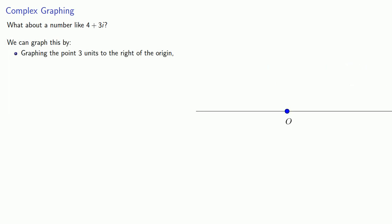This leads us to the notion of graphing in the complex plane. We'll graph real numbers along a horizontal number line, and pure imaginaries along a vertical line. What about a number like 4 plus 3i? We can graph this by graphing the point 3 units to the right of the origin, rotating this by 90 degrees to get the point 3i, and then shifting this right 4 units to get 4 plus 3i.